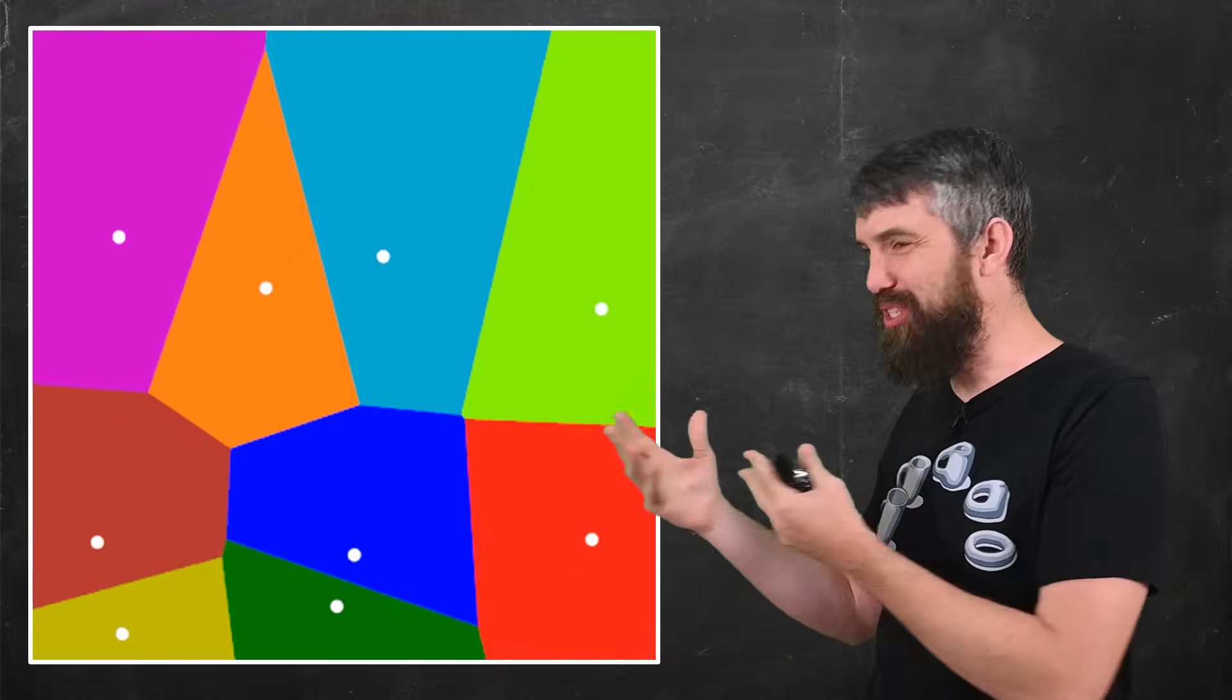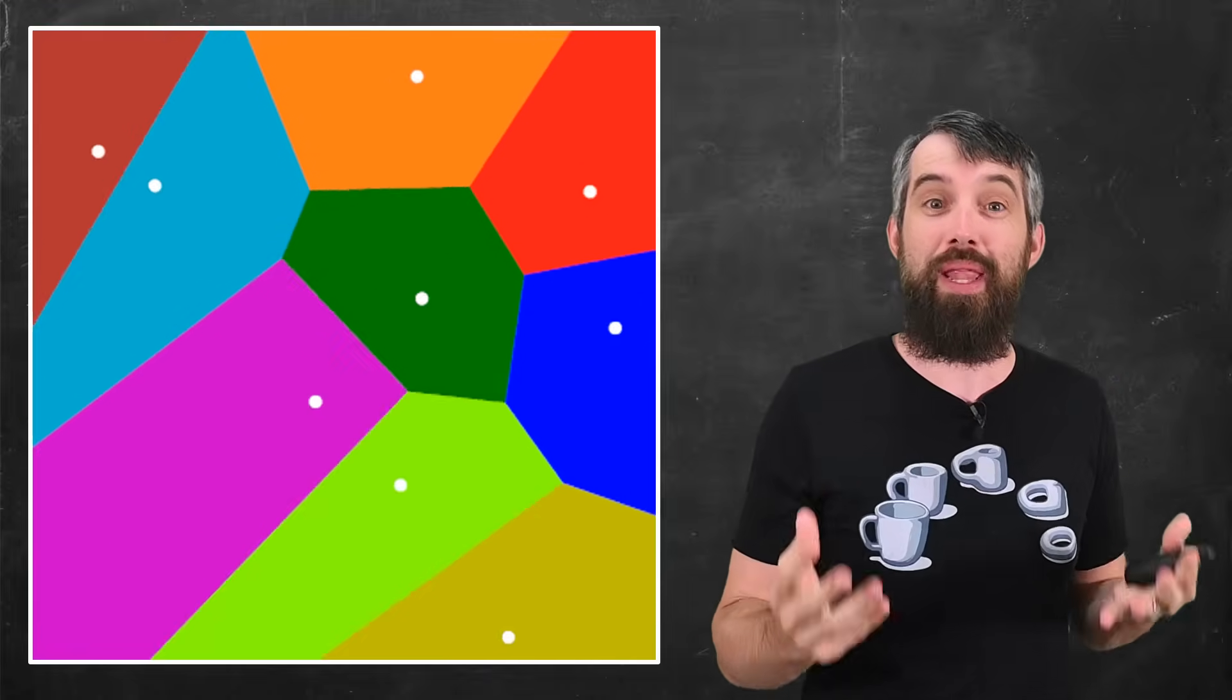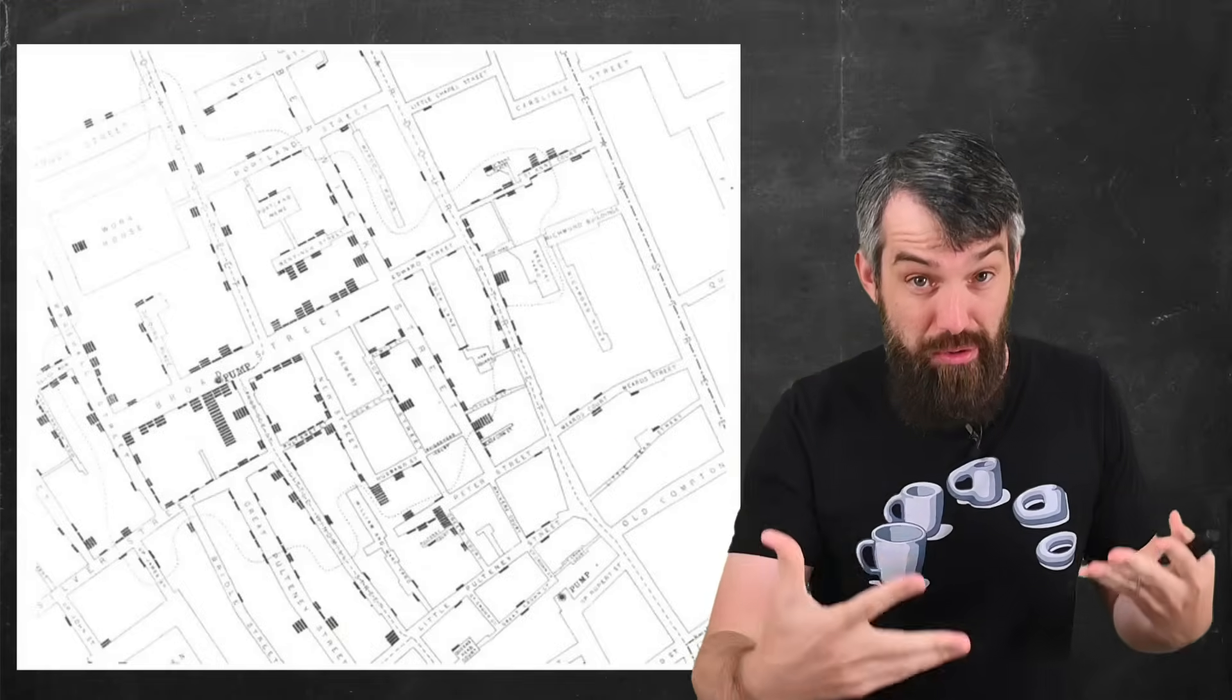If I move my seed points around, then you can get all sorts of different types of Voronoi diagrams, and a cool animation like this one. One of the most infamous examples of using Voronoi cells to actually solve something occurred in the 1850s when there was a cholera epidemic in London.